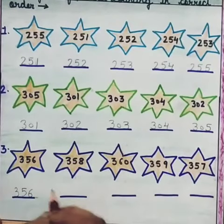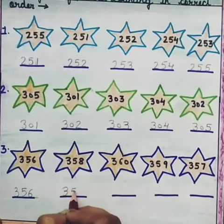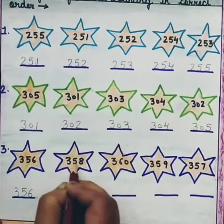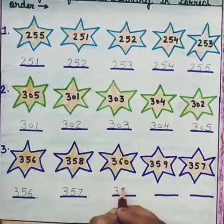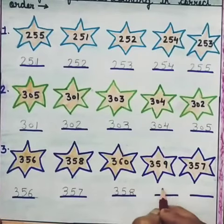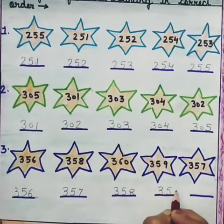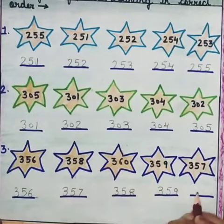Then 357 will come, then 358 will come, then 359 will come and then 360.